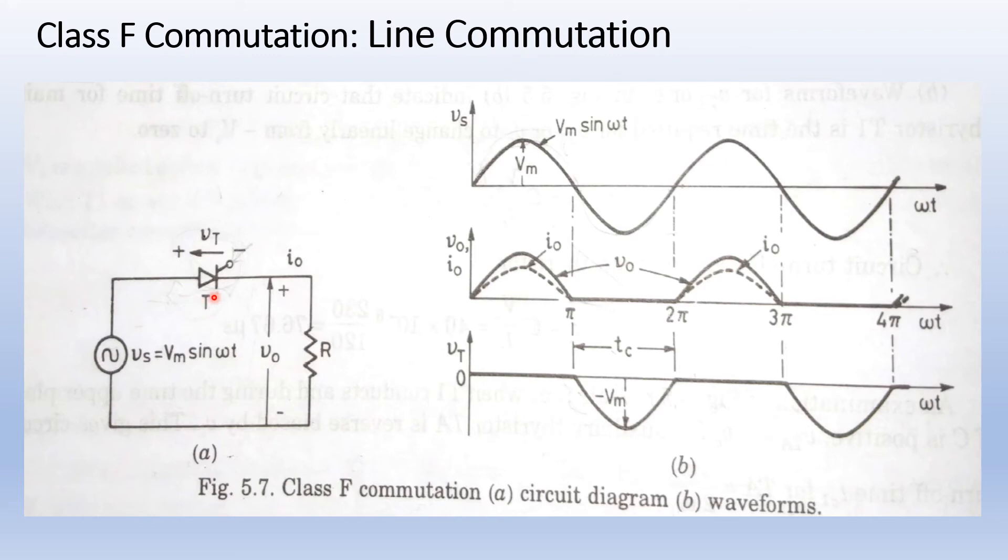When an SCR is energized from an AC source, current has to pass through its natural zero at the end of every positive half cycle. Then AC source applies a reverse bias across SCR automatically. As a result, SCR is turned off. This is called natural commutation because no external circuit is employed to turn off the thyristor.